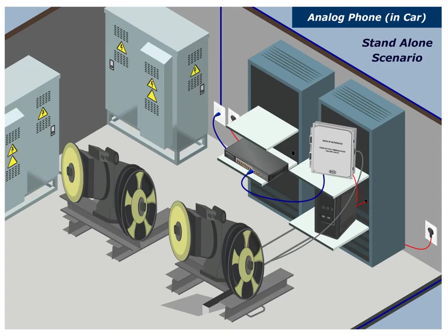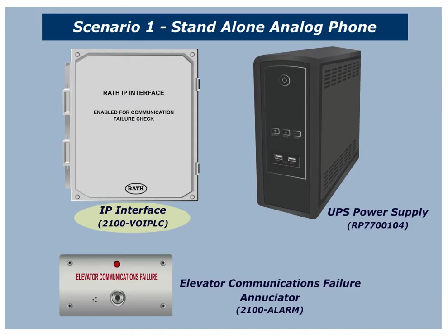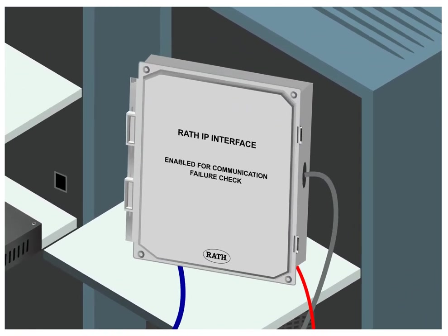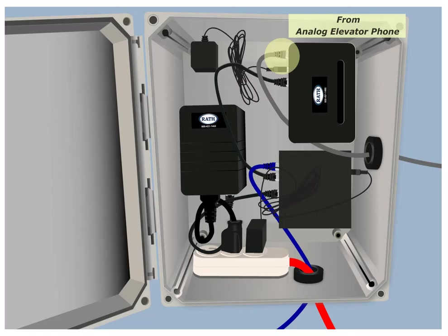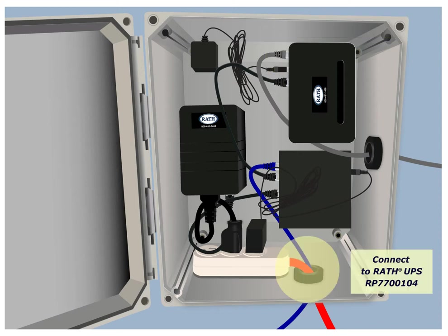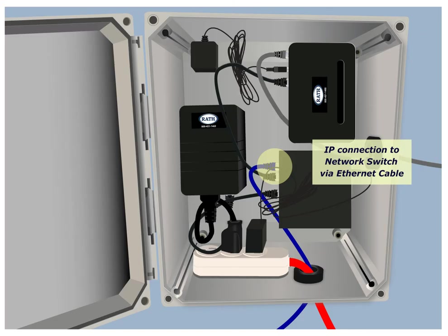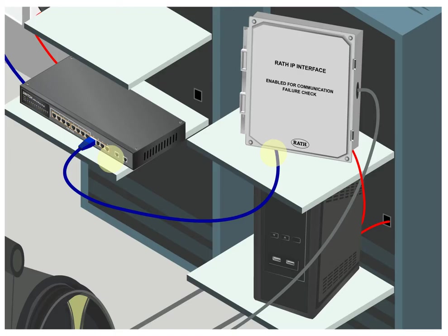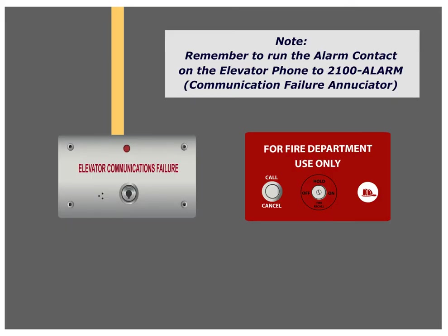Scenario Number 1: Stand-alone analog phone. This application requires an IP interface 2100 VOIP-LC, UPS RP7700104, and an elevator communications failure enunciator 2100 alarm. Step 1: Run the single twisted shielded pair to the 2100 VOIP-LC. The IP setup for this device is the same as the 2100 VOIP. This allows the phone to ping the network to ensure proper communication. Step 2: Connect the 2100 VOIP-LC power to the RP7700104. Step 3: Connect the IP connection of the 2100 VOIP-LC to the network switch via an Ethernet cable. Remember to run the alarm contact on the elevator phone to the 2100 alarm.